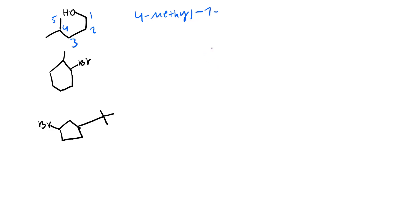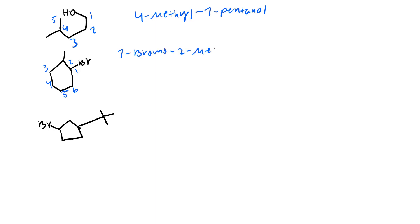Over here we don't have an alcohol. We only have a cyclohexane, a bromine, and a methyl. What comes first - methyl or bromine? I'd rather start at the bromine because B comes before M. So: 1, 2, 3, 4, 5, 6. That's 5 for the methyl. We have a 1-bromo-2-methyl-cyclohexane.